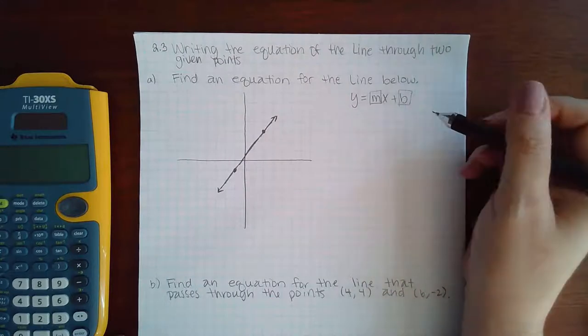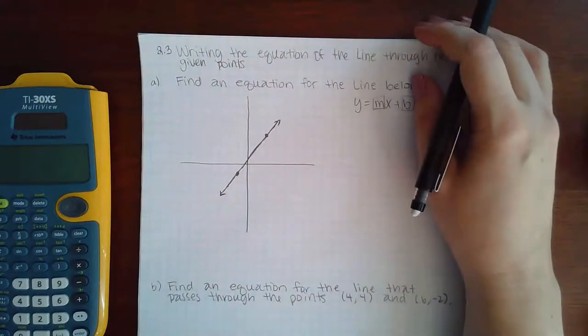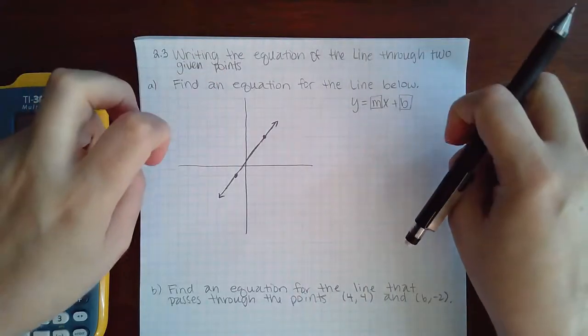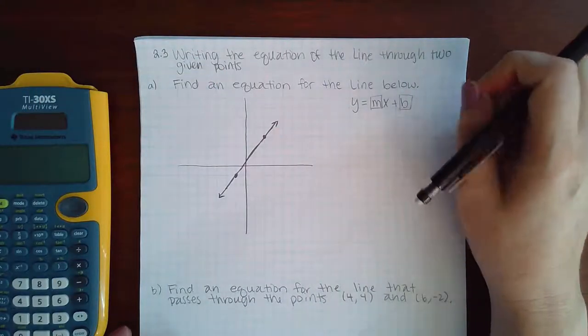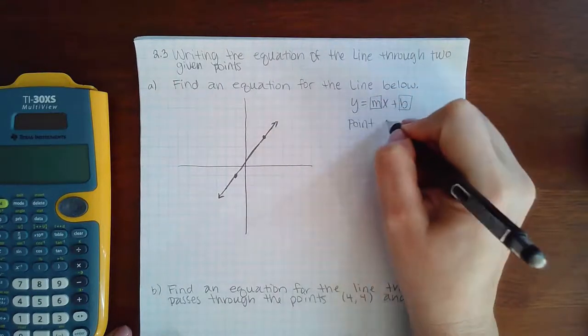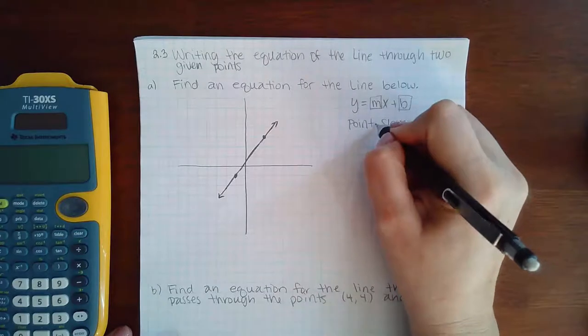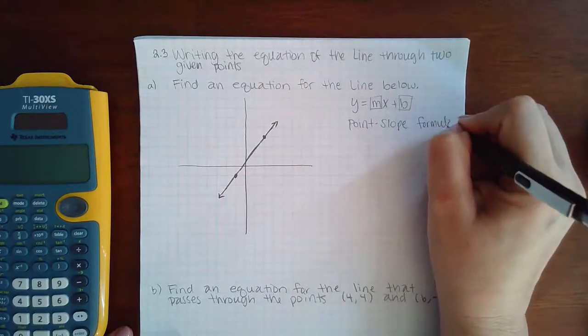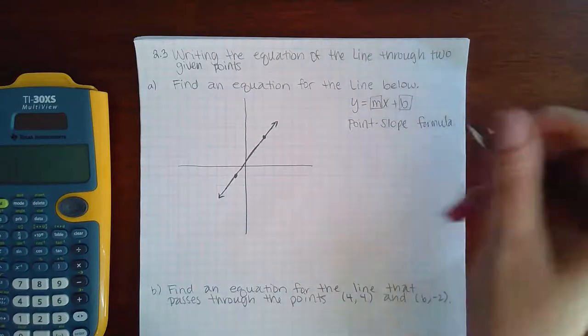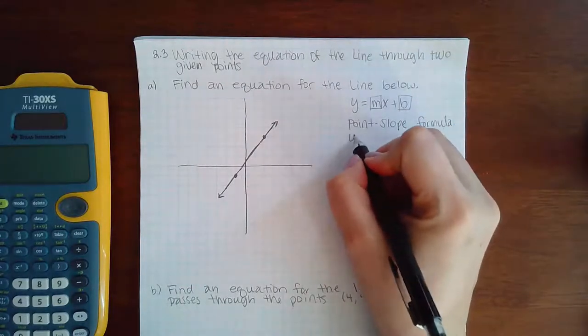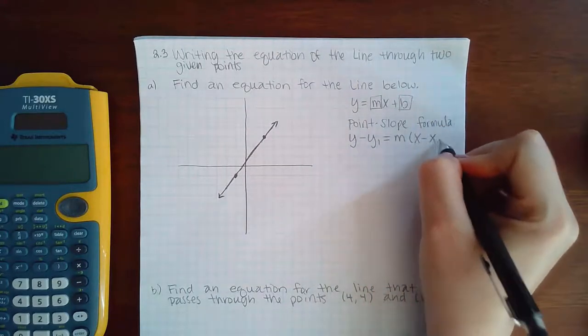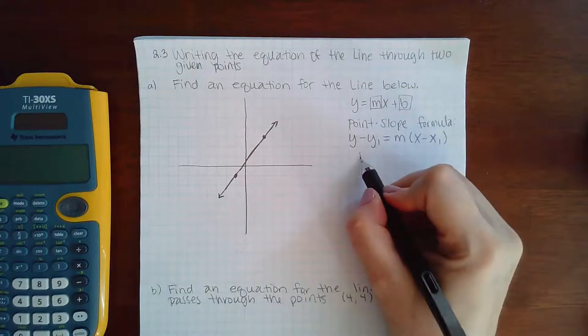However, we also have another formula for finding the equation of the line. It's called the point-slope formula. For the point-slope formula, that's going to look like this: y minus y1 equals m times x minus x1, where m is of course the slope.